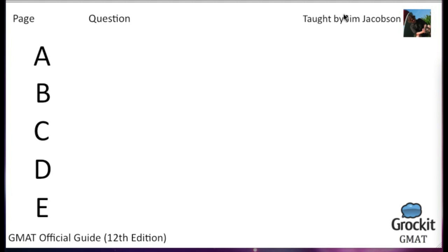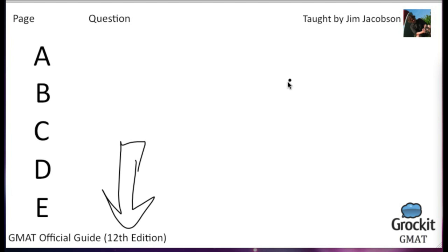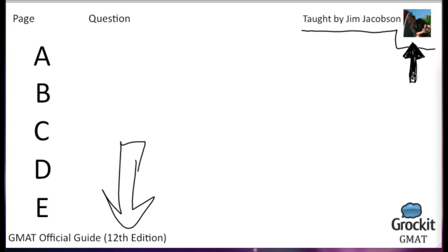Hello and welcome back everyone to Grockett's OGTV, the GMAT edition. We're going through the 12th edition of the guide to the test. My name is Jim Jacobson. Last time we finished up the critical reasoning section, so this time we are picking up further on in the book. We're in the last section we're going to cover as part of these OGTV broadcasts — the sentence correction section — and we're just going to start that section today.